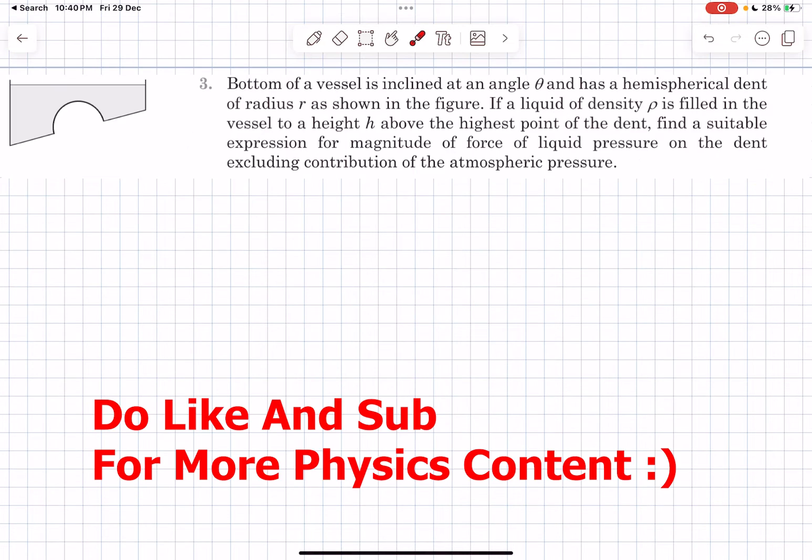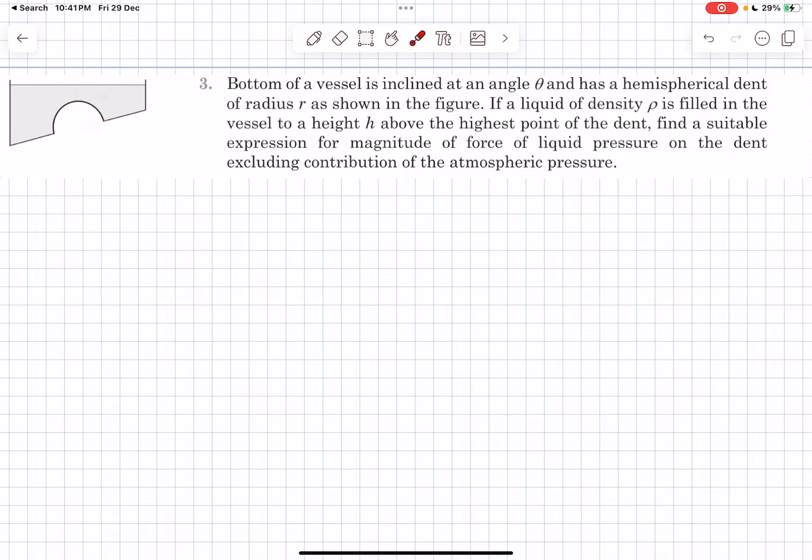So that was it for this problem. Now let's move on to Problem 3. We have a vessel filled with water and it has a hemispherical dent. The highest point is at a depth h from the free surface, and the radius of the hemispherical part is r. We have to find the magnitude of force of liquid pressure on the dent, excluding the contribution of atmospheric pressure.